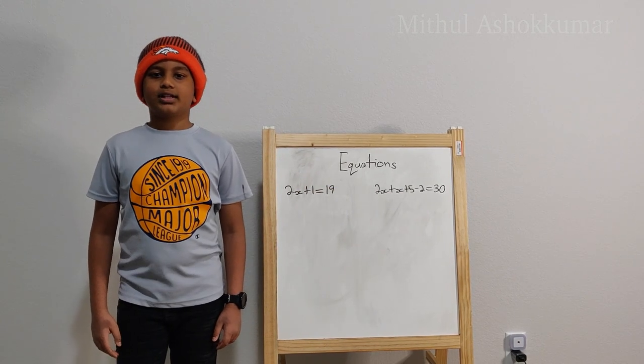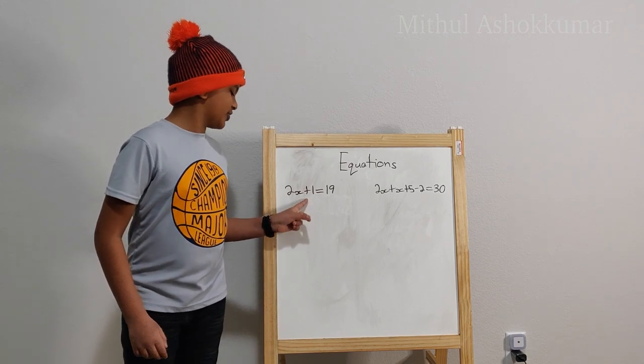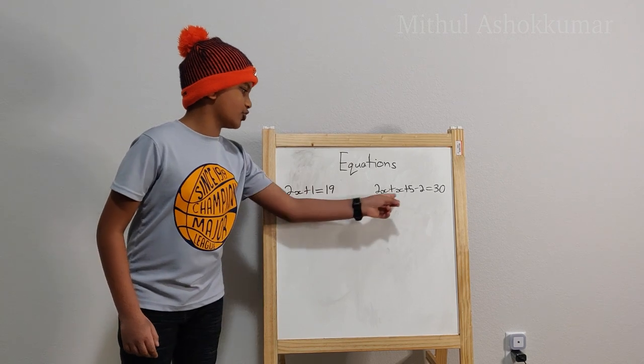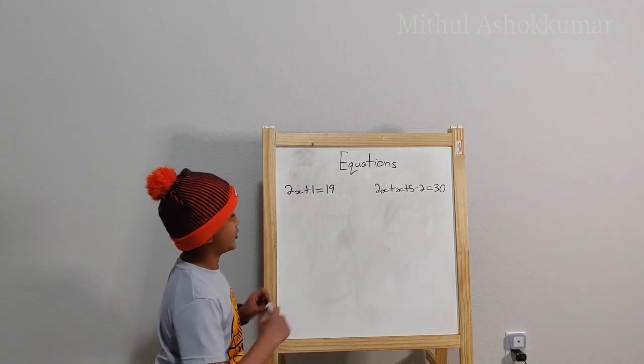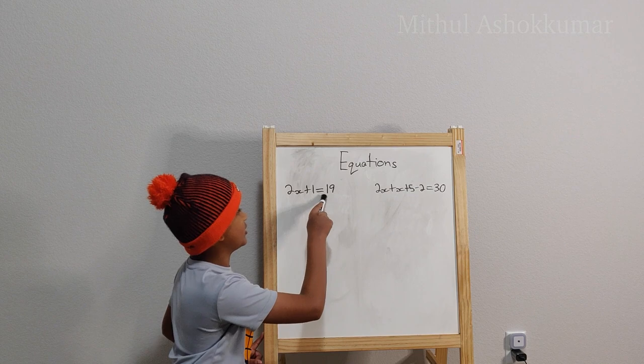Alright, let's get started. We are going to solve this simple one in order for you to solve this more complex one. So as you can see the equation is 2x plus 1 equals 19.